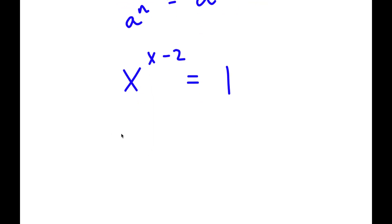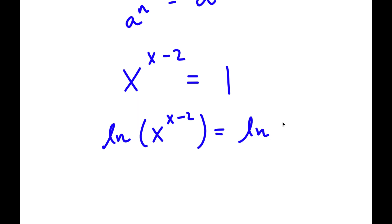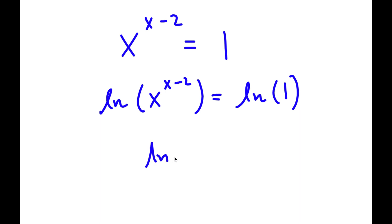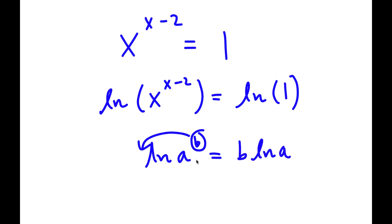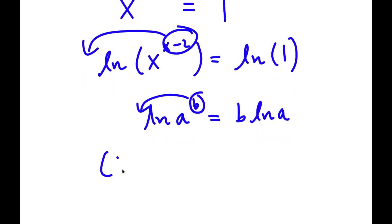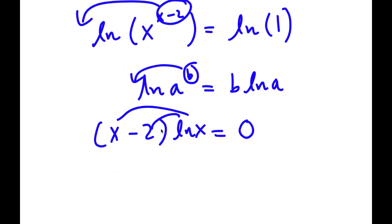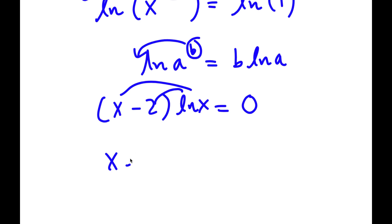If I take the natural log on both sides, I get ln of x to the power of x minus 2 is equal to ln 1. And if I have something in the form ln a to the power of b, I can move the exponent b to the front, so this equals b times ln a. In this case, ln x to the power of x minus 2 — I can move x minus 2 to the front — so this equals x minus 2 times ln x, which equals ln 1, which is 0.